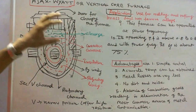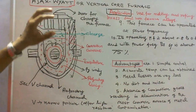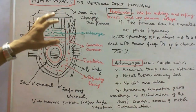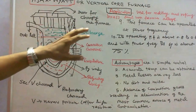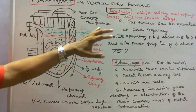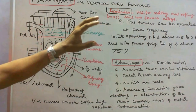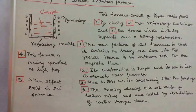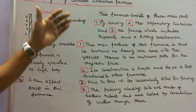The applications of the Ajax-Ward Furnace are: this furnace is widely used for melting and refining brass and non-ferrous alloys.